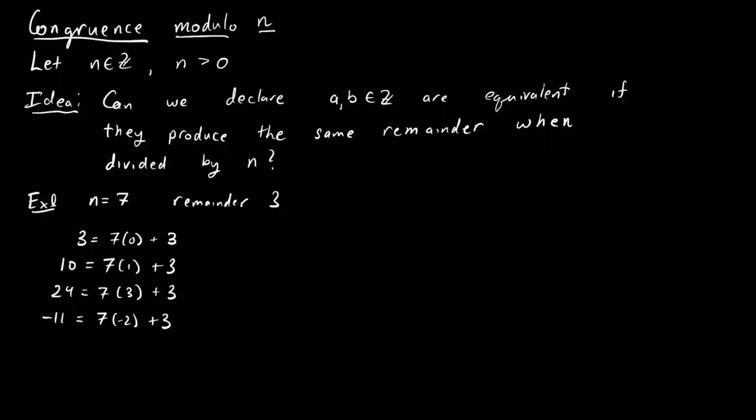Let's explore this a little bit more. One thing we can notice is that, in some sense, I want to say that 3 and 10 are equivalent, that 3 and 24 are equivalent, that 10 and 24 are equivalent, and so on. One thing I might notice is that 7 divides 10 minus 3, right? 10 minus 3 is 7, so 7 divides 7.